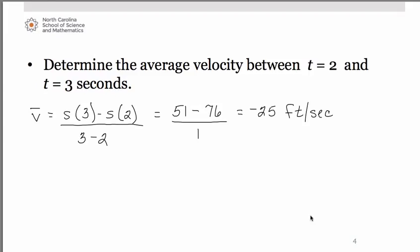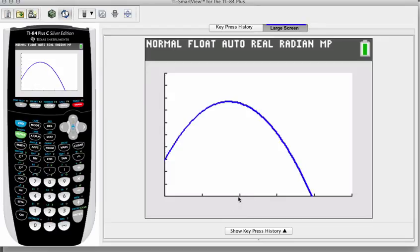So let's take a look again at the graph. So here's two seconds. Here's three seconds. And notice on that period of time, the ball is on its downswing. That's why the average velocity came out negative.